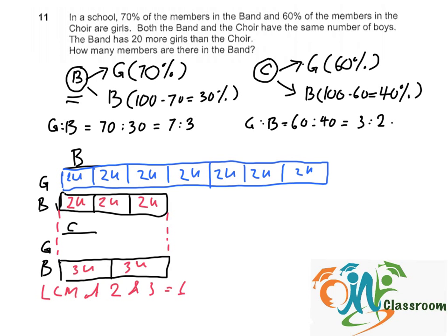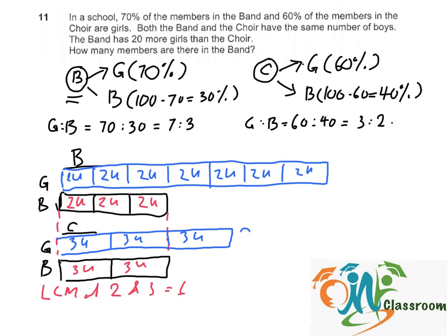For the girls in choir, we have 3 units, and each unit is further divided into 3. Now let's go back to the question: the band has 20 more girls than the choir. The choir girls total 3 plus 3 plus 3 plus 3 equals 9 units, and the band girls total 2 plus 2 plus 2 plus 2 plus 2 plus 2 plus 2 equals 14 units. So 14 units minus 9 units equals 5 units, which is the difference in the number of girls.